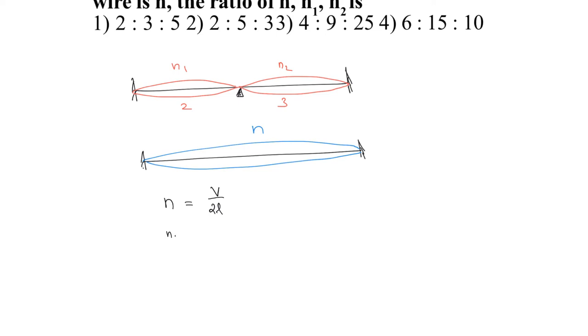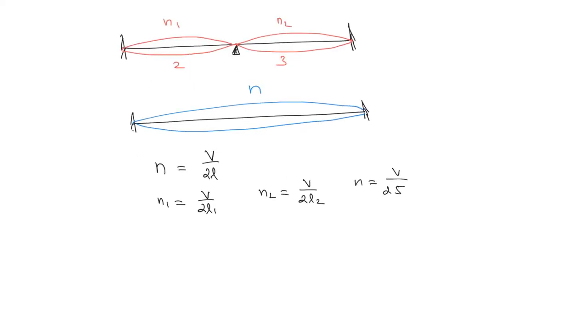We can write the value of n1 as v divided by 2l1, and n2 as v divided by 2l2. The value of n can be written as v divided by 2 into total length, which is 2 plus 3, which is 5.